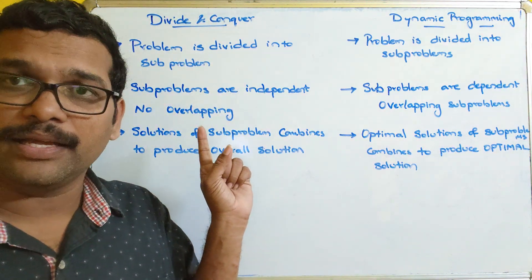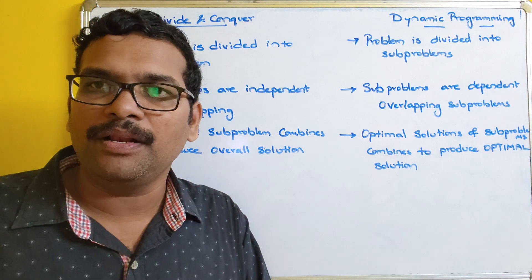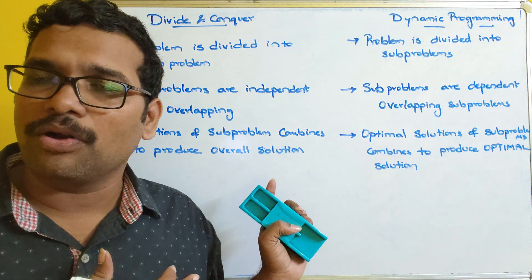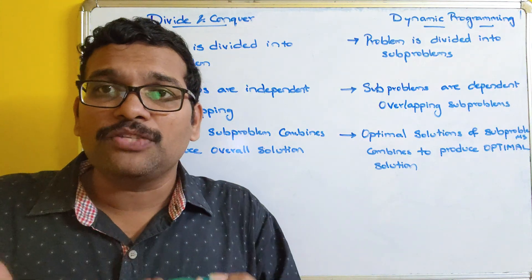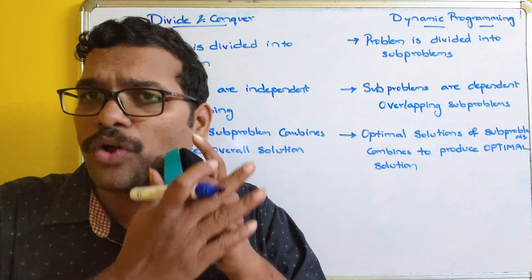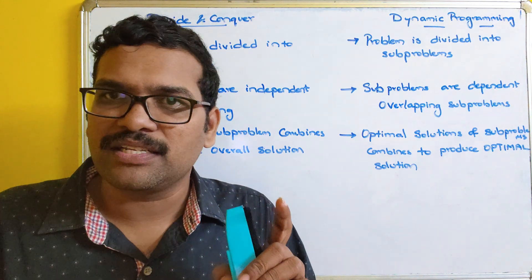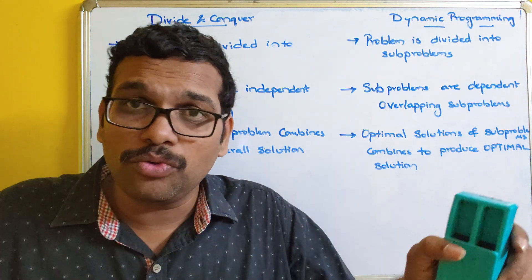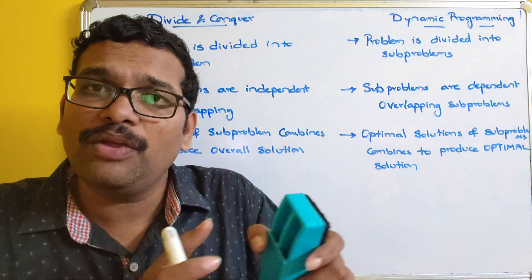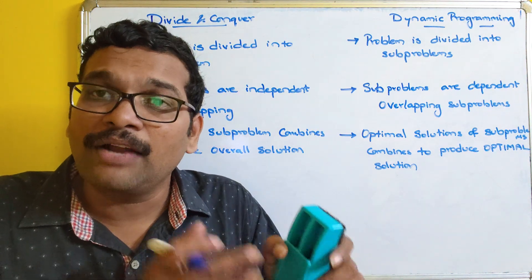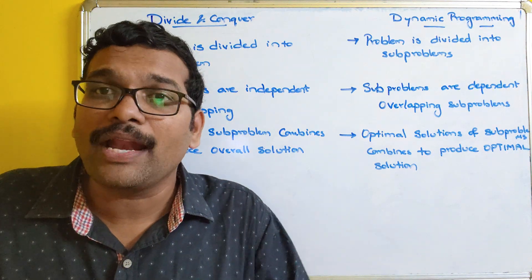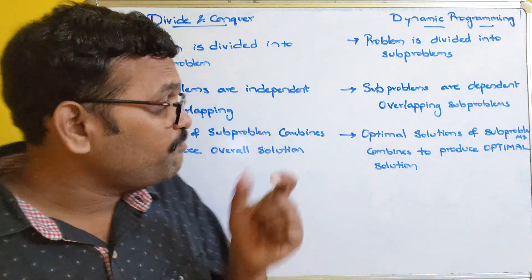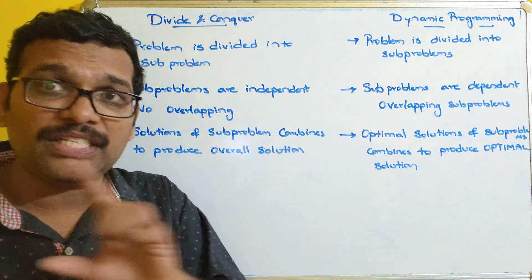Divide and conquer doesn't work like that. For example, in merge sort or binary search, whatever process we use, we get only one solution. In binary search, we divide the problem into two halves, process only one half, and get a single result — whether the element is present or not. There are no multiple solutions.